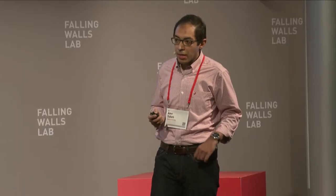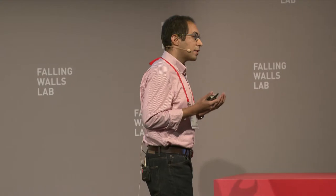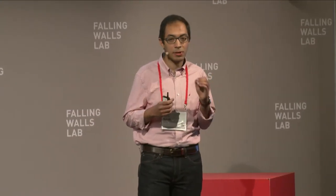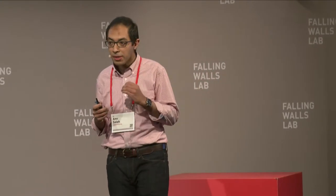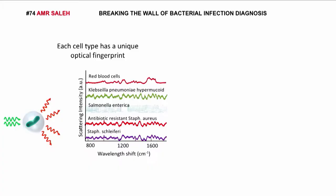To break this wall of slow diagnosis, I use light. Each type of cell or bacteria has a specific membrane structure that scatters light in a very unique way, like a fingerprint. You can think of it as if each cell has a very specific color. This color is typically very weak to detect, but using certain types of nanoparticles, I can make this color a lot more vivid.